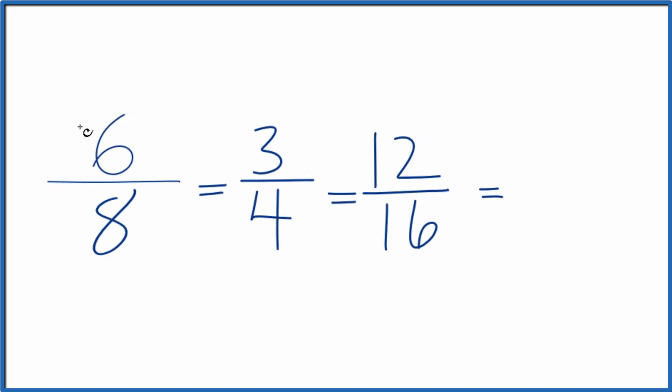One more. And then let's multiply the numerator and denominator by 4. 6 times 4, that's 24. 8 times 4 is 32.